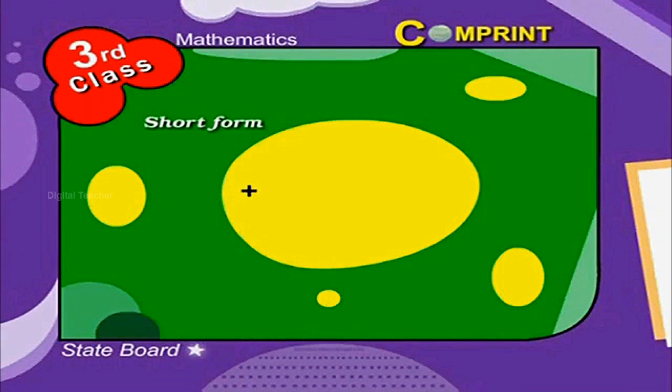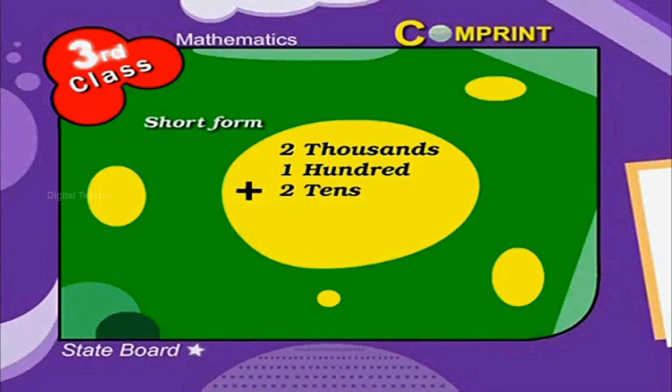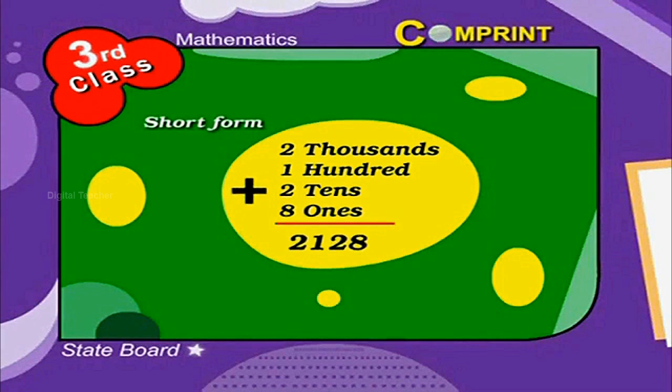In another example, 2 thousands, 1 hundred, 2 tens, and 8 ones. Together, we get 2128.